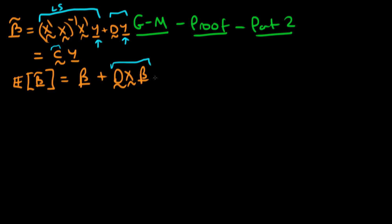Because beta is a vector of coefficients it won't in general be zero, so we need dX equal to zero in order for the expectation of our estimator to equal the population parameter. So we have the conditions under which our new estimator beta tilde is in fact unbiased.